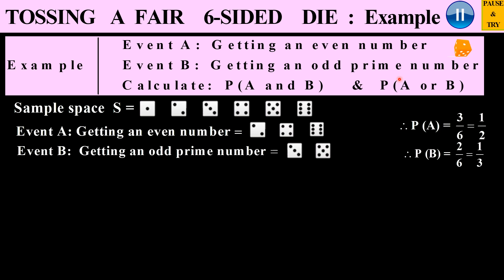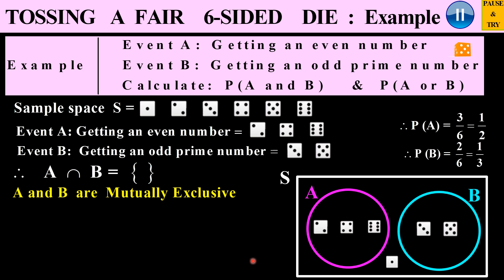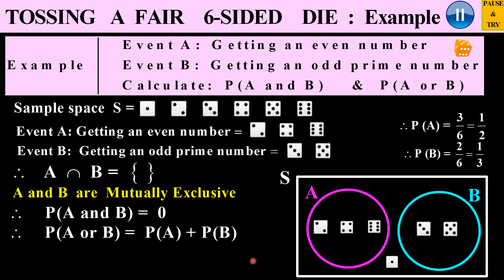Looking at event A and event B, they have nothing in common — the intersection is empty. In the event diagram, event A contains 2, 4, 6 and event B contains 3, 5, with 1 sitting outside both sets. Because the intersection is empty, A and B are mutually exclusive, so P(A ∩ B) = 0. For P(A or B), using the modified addition rule: P(A or B) = 3/6 + 2/6 = 5/6.